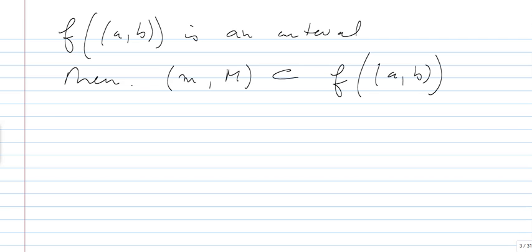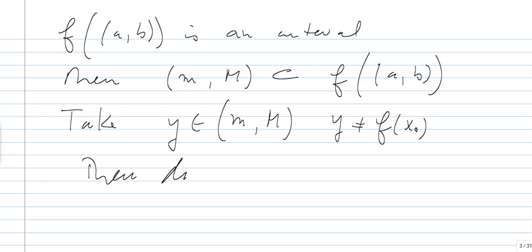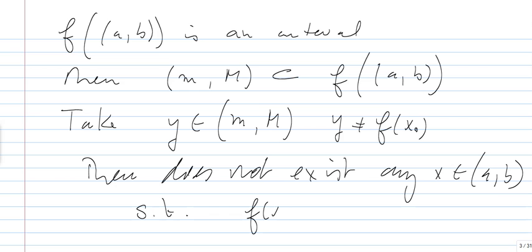And we do have, so take y in the interval (m,M), and y different from F(x0), because F(x0) may be in that interval. So let's take y different from it, because anyway it's a non-degenerate interval, we may have a lot. So there is no way there does not exist any x in (a,b) such that F(x) is equal to y.